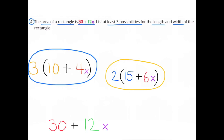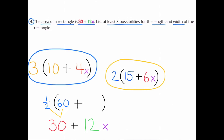A third equivalent expression: 30 plus 12x can be written as one half times 60, because half of 60 is 30, plus one half times 24x, because half of 24x is 12x — giving one half times (60 plus 24x).